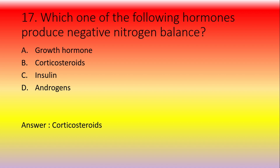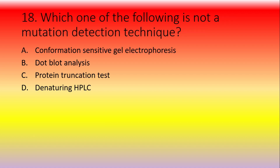Which of the following is NOT a mutation detection technique? Option A: conformation-sensitive gel electrophoresis, option B: dot blot analysis, option C: protein truncation test, option D: denaturing HPLC. The answer is dot blot analysis, which is used for antigen-antibody detection, not DNA mutation analysis.